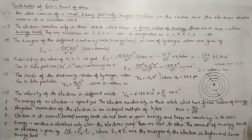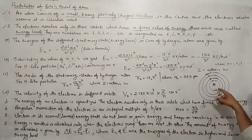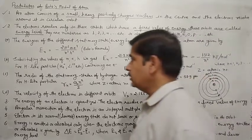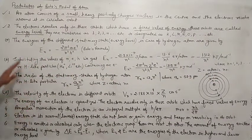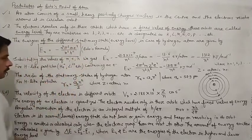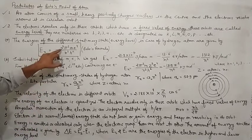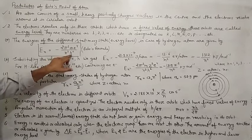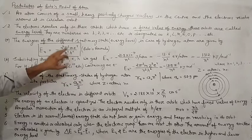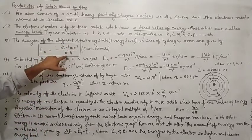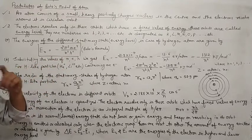Iske baare mein aage bhi next point ke andar padhenge, ki energy ka order kya hoga. Abhi toh hum yeh samajhna hai ki jis orbit mein electron revolve kar raha hai, uski energy fix hai — jaise n equals to 1 orbit ki energy fix hai, 2 ki energy fix hai, 3 ki energy fix hai. Ab hum baat karte hain: energy of different stationary states, jinko hum energy level keh rahe hain, in case of hydrogen atom are given by a formula. Agar mujhe hydrogen atom ki energy find karni hai, toh uske liye yeh Bohr formula diya gaya tha. Yahan pi, m (mass of electron), e (charge of electron), n (number of shell), aur h jo hai Planck constant hai.